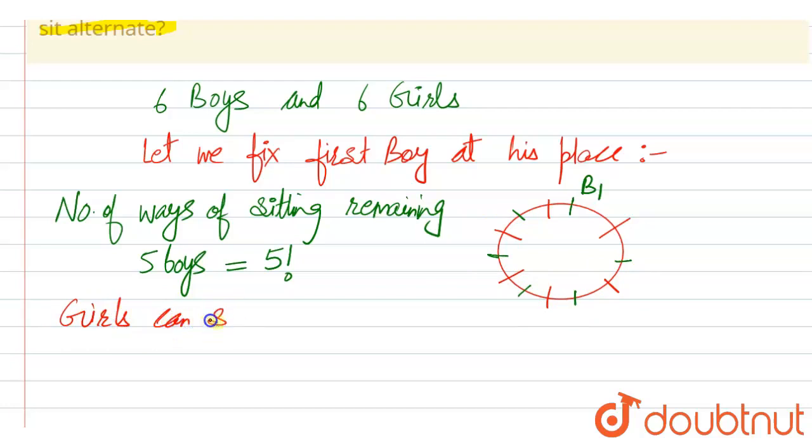So girls can sit in places between boys. We have six places, so this can be done in six factorial ways.